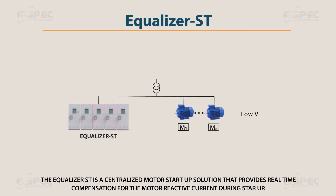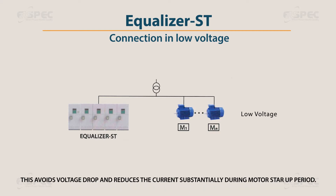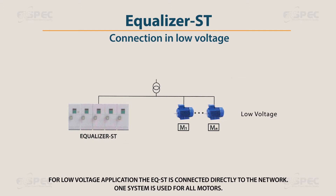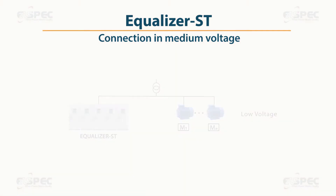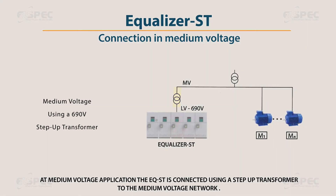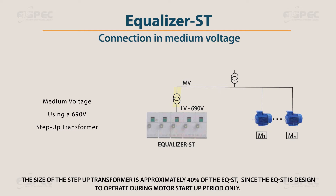The Equalizer ST is a centralized motor startup solution that provides real-time compensation for the motor reactive current during startup. This avoids voltage drop and reduces current substantially during the motor startup period. For low voltage applications, the EQST is connected directly to the network, with one system used for all motors. At medium voltage applications, the EQST is connected using a step-up transformer to the medium voltage network. The step-up transformer is approximately 40% of the EQST size, since the EQST is designed to operate during motor startup period only.